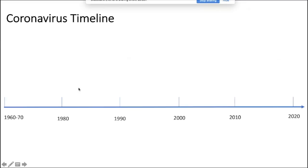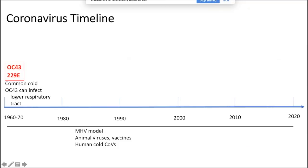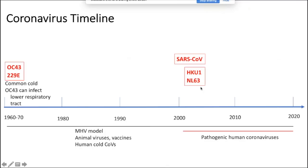I want to give you a coronavirus timeline starting from the 1960s–70s, although coronaviruses were actually described as early as the 1930s. Since the 1960s–70s, we have been studying MHV as a model virus, animal viruses, vaccines, and human cold coronaviruses OC43 and 229E. The next human coronavirus described was SARS, which emerged around 2002–2003 in China. After SARS was discovered, people looked for other coronaviruses—I call this the pathogenic human coronavirus era. HKU1 and NL63 were both discovered; these viruses are of intermediate pathogenicity.